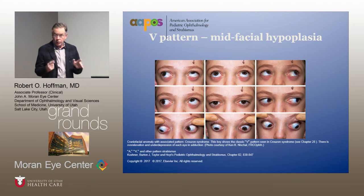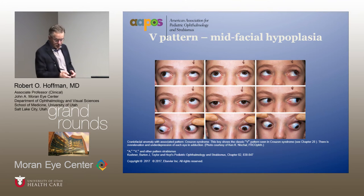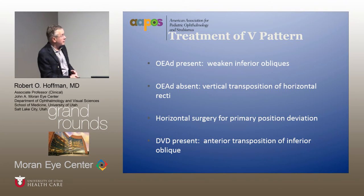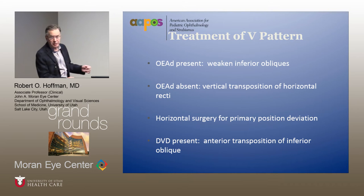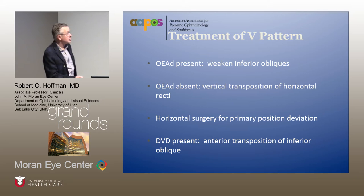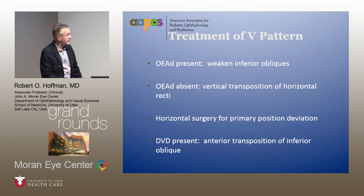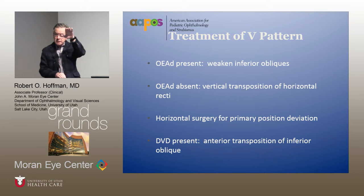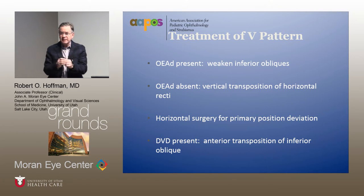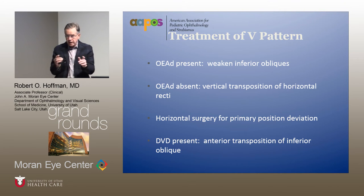That would involve recessing or resecting the lateral rectus muscles and shifting those muscles superiorly. For treatment of V patterns: if you have over-elevation and adduction, weaken the inferior obliques — with the caveat that you do not do that with craniofacial syndromes without thinking carefully. If there is no over-elevation and adduction, do vertical transposition of the horizontal recti. You still need to deal with the primary position deviation, so you do horizontal surgery on either medial or lateral rectus muscles for the primary position deviation.